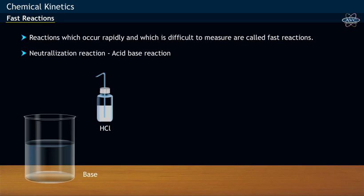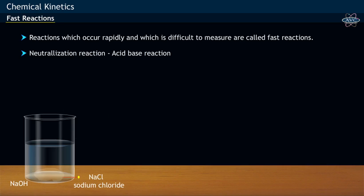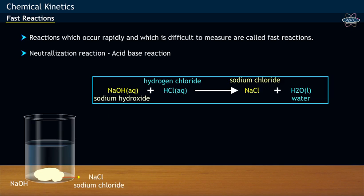When hydrochloric acid is added to base sodium hydroxide, sodium chloride salt is formed immediately, as shown by the equation. Hence it is a fast reaction.